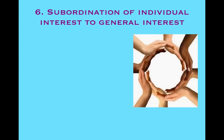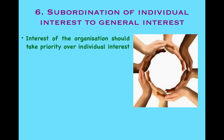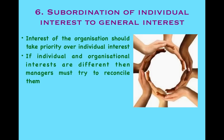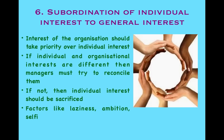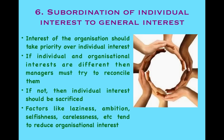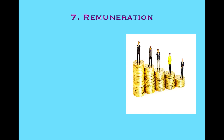The sixth principle is Subordination of Individual Interest to General Interest. The interest of the organization should take priority over individual interest. It is very important to fulfill organizational objectives and goals first and then think about individual interest. If individual and organizational interests differ, it is the responsibility of managers to try and reconcile all objectives together. Factors like laziness, ambition, selfishness, and carelessness tend to reduce organizational interest and increase individual interest.